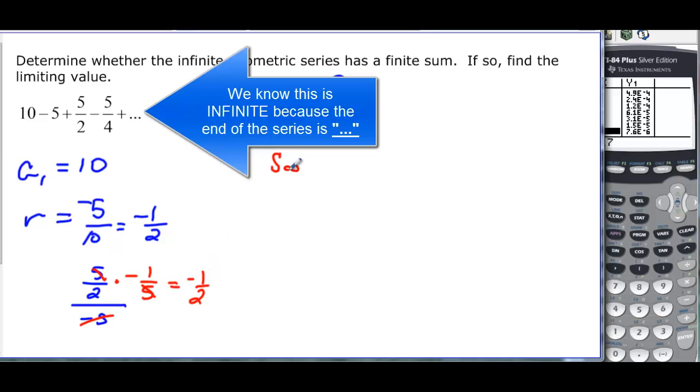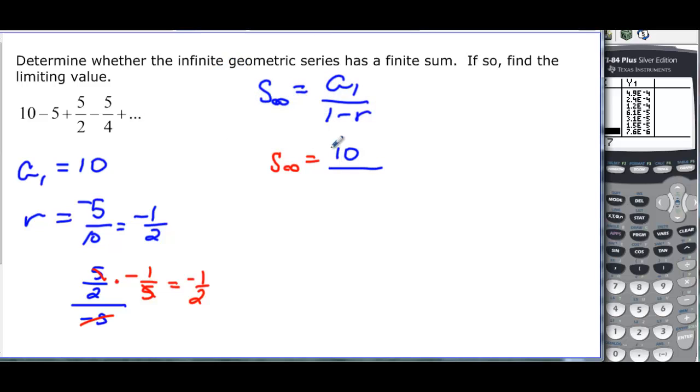So I know that s sub infinity for us is 10, that's my a sub 1, divided by 1 minus r. So I have 1 minus my r, which is negative 1 half. So we have 10 over 1 plus 1 half. And your book is going to answer with fractions. So we're going to say that this is 10 divided by 2 over 2 plus 1 over 2, or 3 halves. And again, you're going to learn this one really well, aren't you? You can multiply by the reciprocal instead of dividing. And that will give us 20 over 3. So s of infinity is equal to 20 over 3. And this sum keeps getting closer and closer to 20 over 3. That's the limiting value.